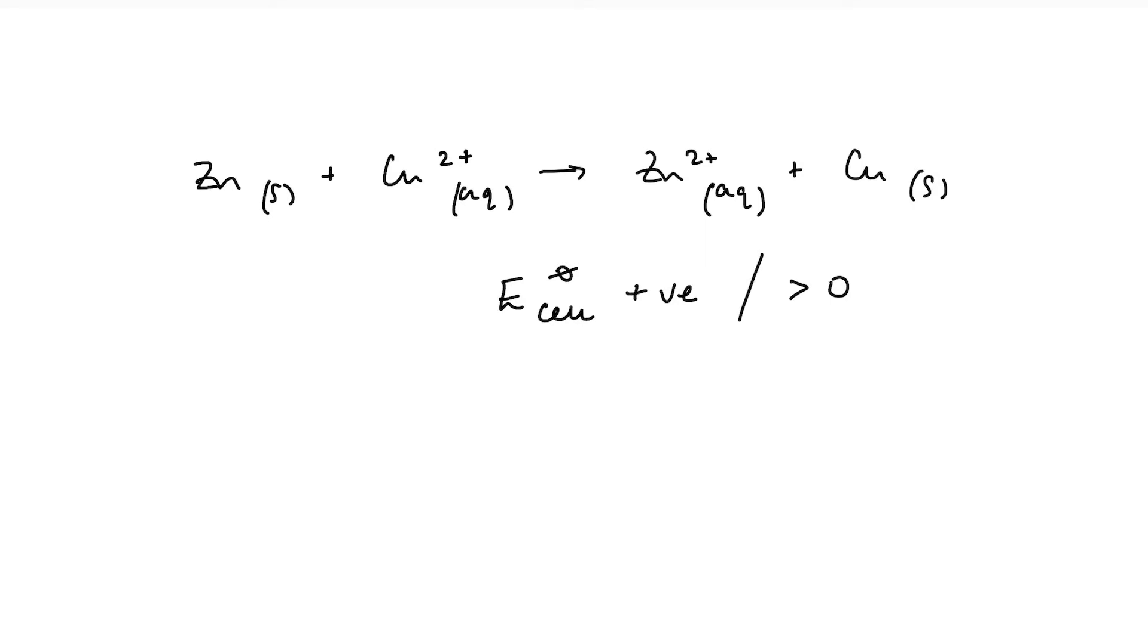Alternatively, we could look for a negative change in the Gibbs energy. A negative change in Gibbs energy, a value less than zero, would also tell us that this reaction is feasible or spontaneous. It will come as no surprise that these two terms are linked mathematically. In this video, I'm going to help you understand the relationship between E cell and Gibbs energy change.